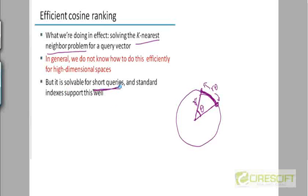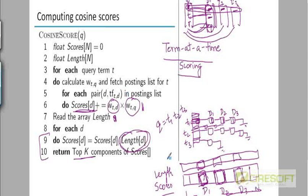For short queries, for example, this query was just three terms long, we know how to do this well. We've already seen how standard indexes can support this. We just saw that here.